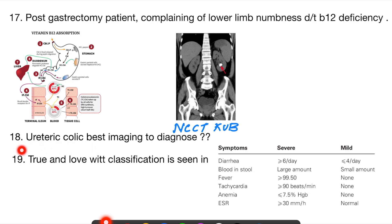The next question was: ureteric colic—best imaging to diagnose? Ureteric colic is NCCT KUB. Usually, this image which I have shown here is an NCCT KUB. You can see very clearly a stone which is present in the kidney. This is an image of NCCT, so you can see the stone which is very well appreciated in this picture. The best imaging to diagnose ureteric colic is NCCT KUB.